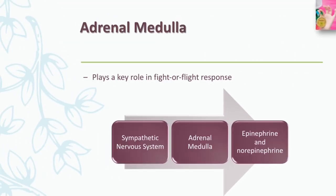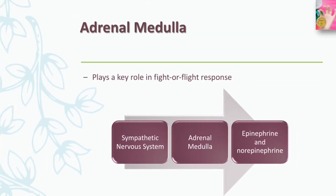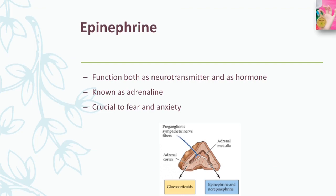Stress hormones secreted by the adrenal cortex also interact with the immune system — the body's defense against invading viruses or bacteria. The adrenal medulla plays a key role in the fight-or-flight response. When aroused, the sympathetic nervous system stimulates the adrenal medulla, which in turn produces epinephrine and norepinephrine, also known as adrenaline and noradrenaline. This secretion is enabled by the sympathetic nervous system.